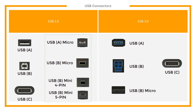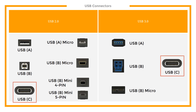USB-A micro, B micro, and B mini connectors can be found on devices such as cellphones, tablets, and cameras. Following the release of USB 3.1, a newer standard not covered in this video, came the development of USB Type-C, a reversible plug connector which offers a future-proof solution to USB compatibility and speed requirements.